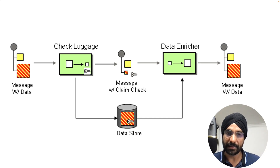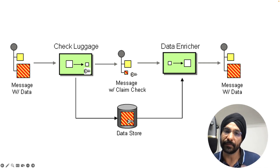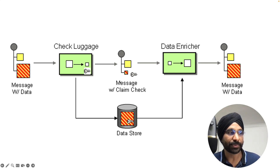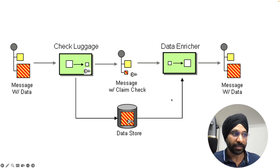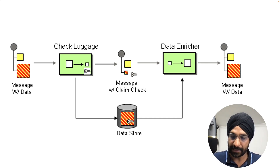As you can see from this diagram, we have a message — 'check luggage'. The message comes to your application and you can park it in some sort of data store — this can be an external data store or you can hold it in memory. What you get back is some sort of ID or message claim token. You carry on processing on the route with the subset of the message, and later on you claim back that original message and can enrich, filter, or process it however you want.